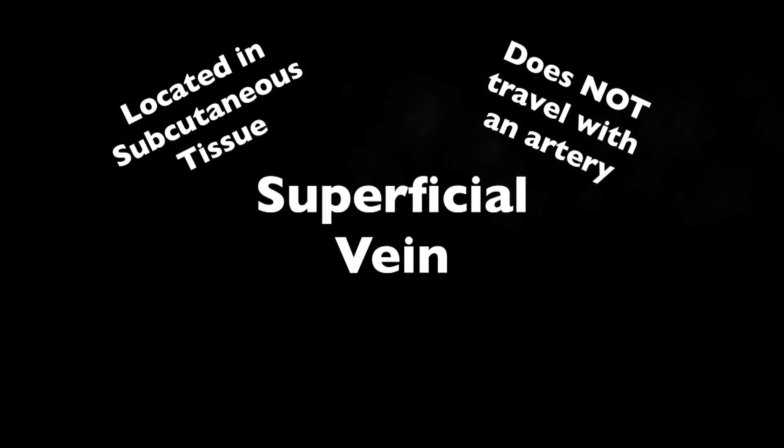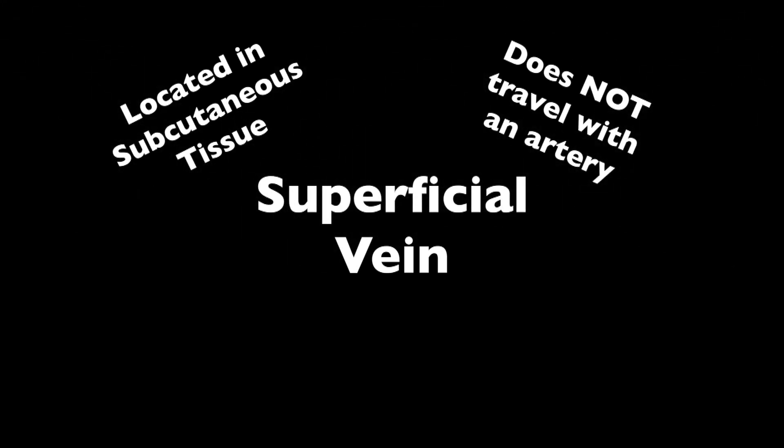Typically when we talk about a clotted vessel we're going to be discussing veins, and we're going to need to differentiate a superficial vein versus a deep vein since the treatment is a little bit different. A superficial vein is located in the subcutaneous tissue, typically superficial to the fascial layer, and it does not travel with an artery.